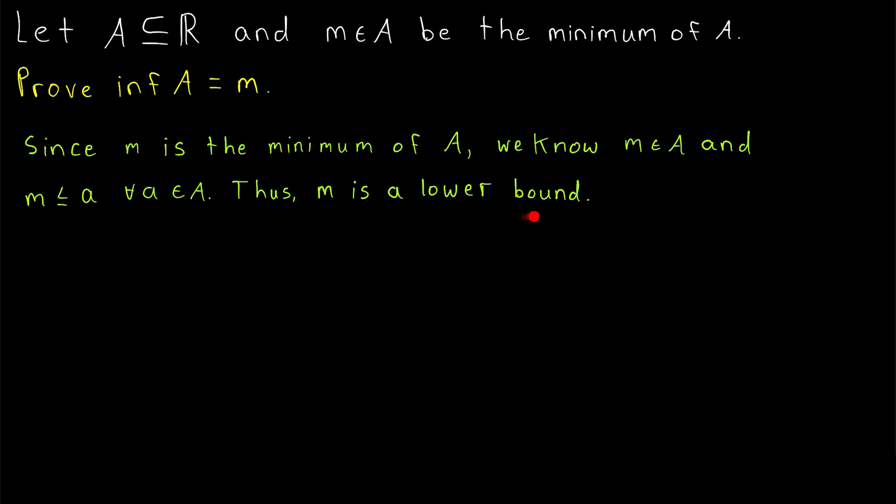Having established that M is a lower bound, all that remains is to prove that there is no greater lower bound. A quick proof by contradiction seems like a good candidate for that.